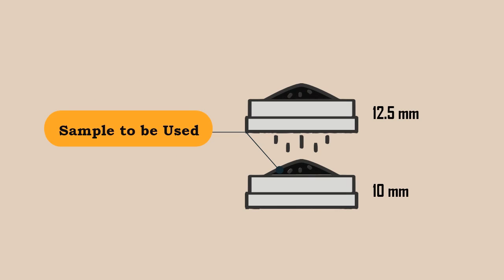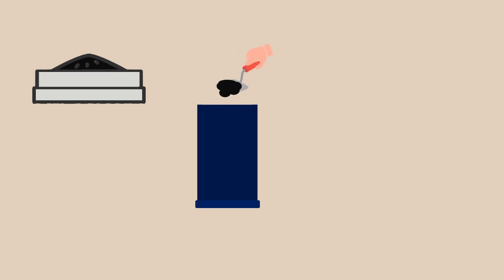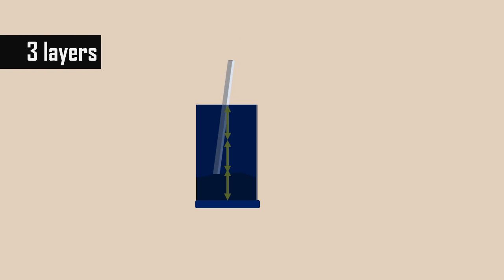The sample used for testing should be oven dried aggregate passing a 12.5 mm sieve and retained on a 10 mm sieve. The quantity of aggregate is filled on the cylinder measure in 3 layers and tamped 25 times for each layer.